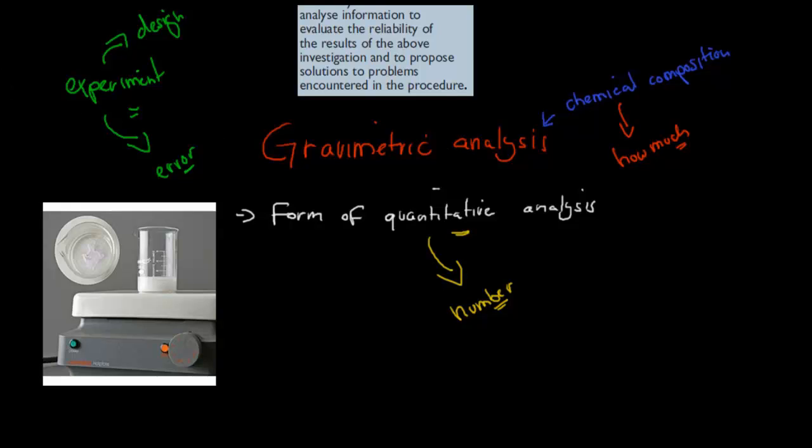So the actual dot point says, analyze information to evaluate the reliability of results of the above investigation, and to propose solutions to problems encountered in the procedure. So we have to figure out what issues could there be in terms of reliability and accuracy, we'll cover both of those, and how can we overcome those? What can we do that we can not make that happen, more or less?